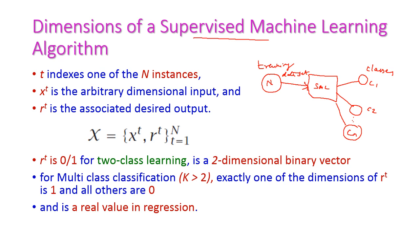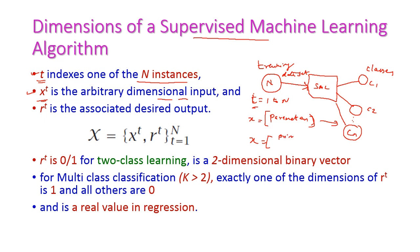The first dimension is t, which indexes one of the n instances. So t equals 1 to n — this is the training data set index. The next one is x_t, which is the arbitrary-dimensional input. N number of samples are given and each sample x_t has its own parameters considered for classification.